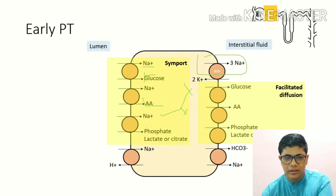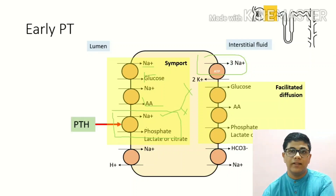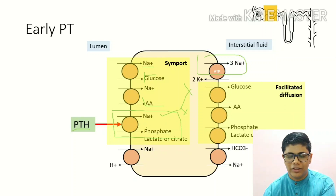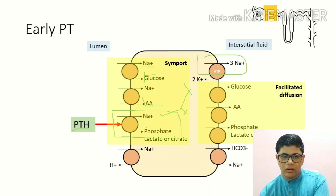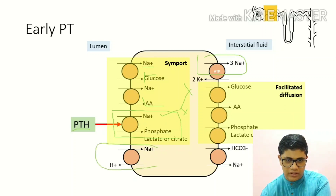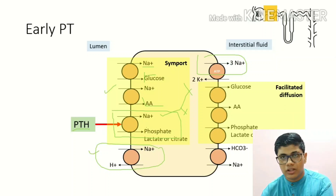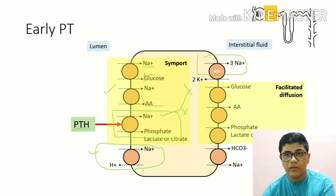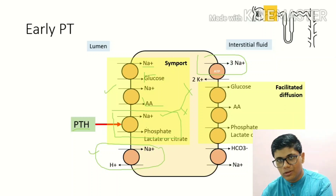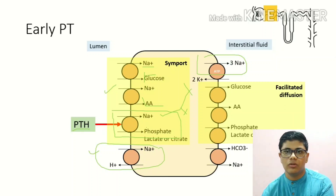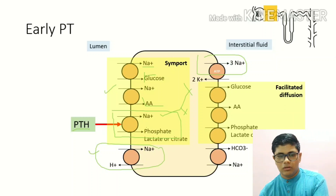An important point: the sodium-phosphate symporter here is inhibited by parathyroid hormone (PTH). PTH is essentially a phosphate-terminating hormone because it increases phosphate excretion by inhibiting the sodium-phosphate co-transporter. As sodium and glucose are transported, the luminal membrane develops a lumen-negative electric potential, since positively charged sodium ions are removed from the lumen. This lumen-negative potential becomes significant when we consider the late proximal tubule.